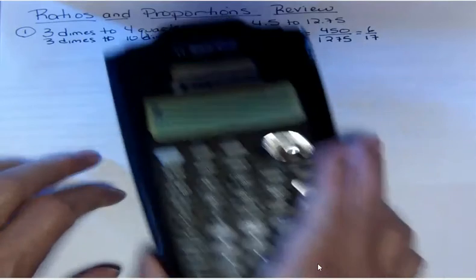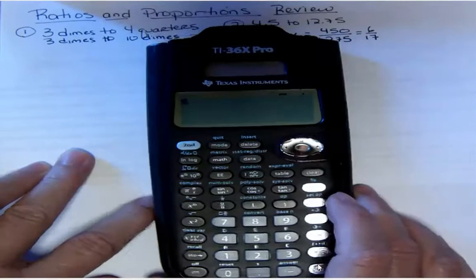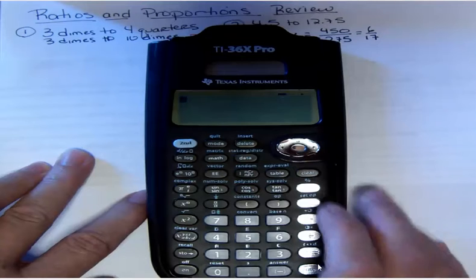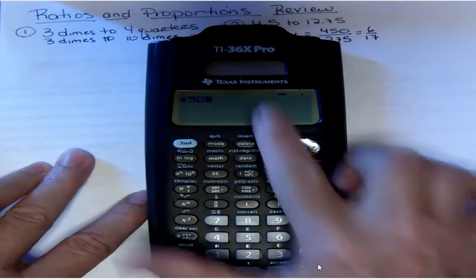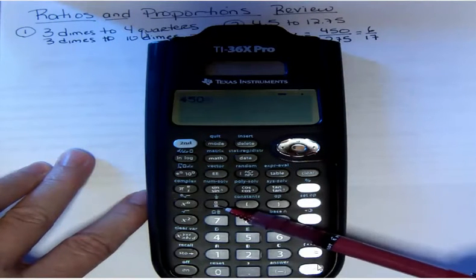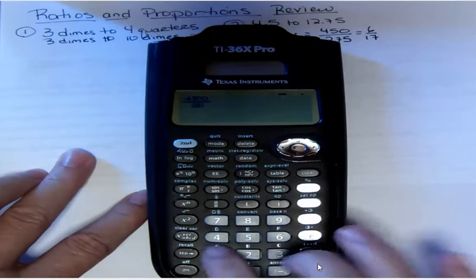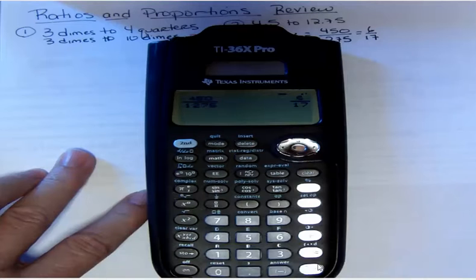I would say learn to use your calculator to reduce. If you take your calculator and you put 450, I've got a TI-36X Pro here that I'm using, it's got a fraction button right here. If you push that, then you get your fraction and you'd say 1275 and hit enter, and that would give you 6/17ths.